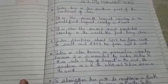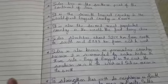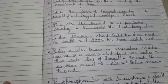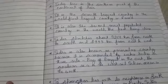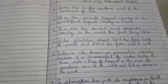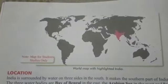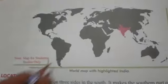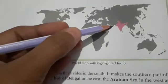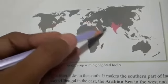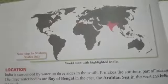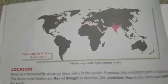India is 3,214 km from north to south and 2,993 km from east to west. This is the world map, and this is the colored part showing India — located in the southern part of the Asian continent.